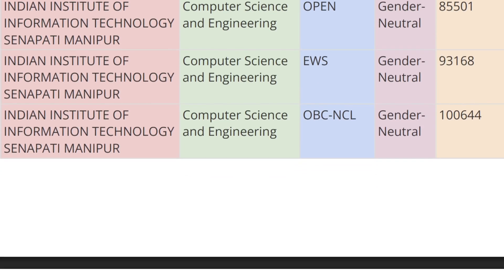Moving ahead, we have IIIT Manipur. For Open category the cutoff rank is 85,501, for EWS category the cutoff rank is 93,168, and for OBC-CL category the cutoff rank is 1,644.